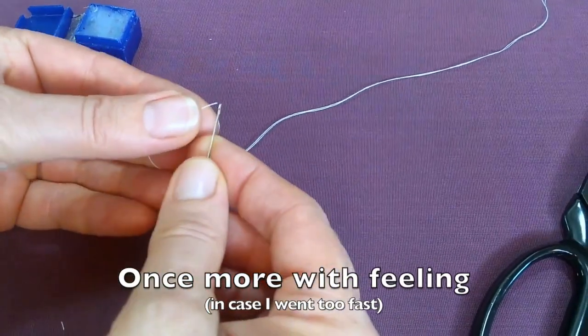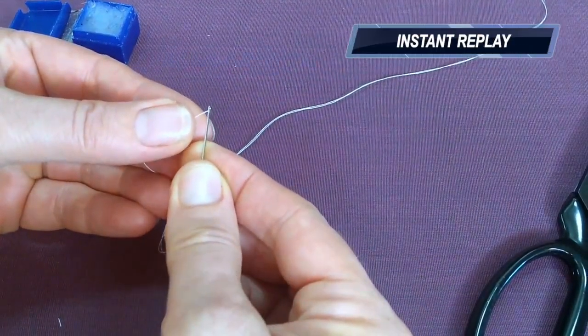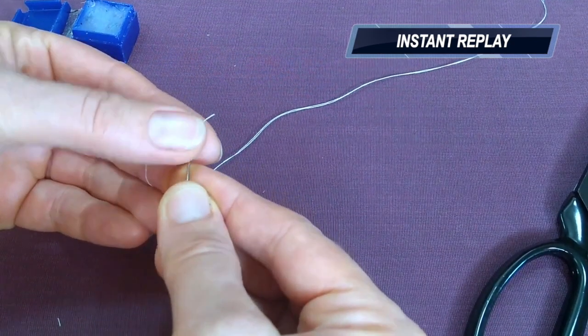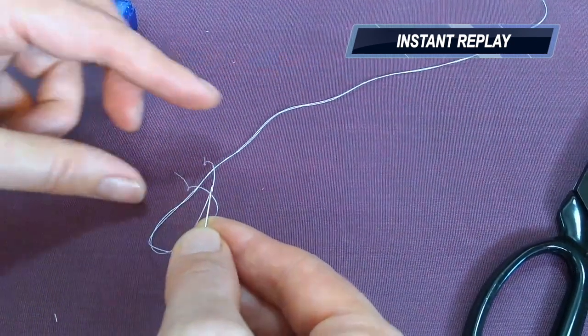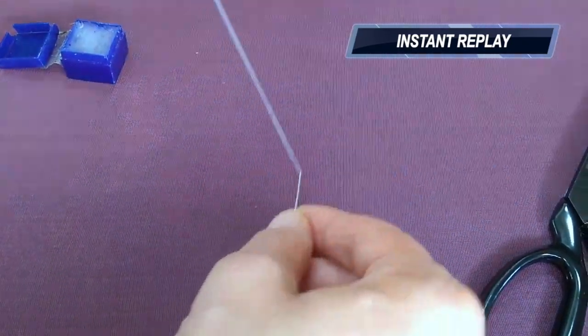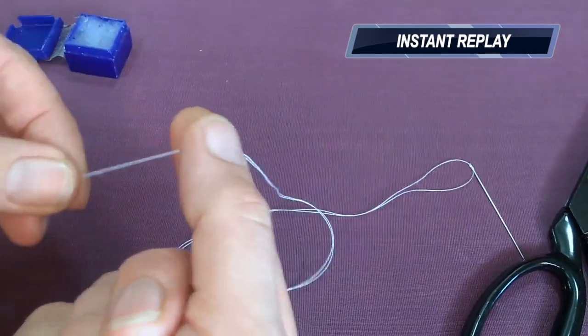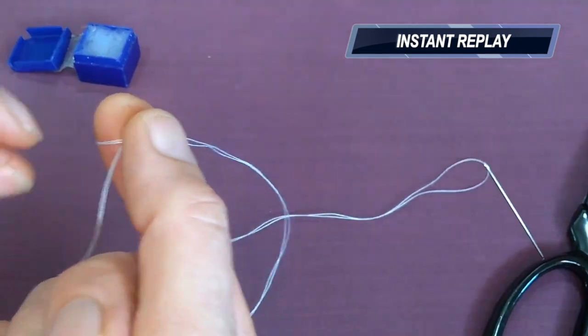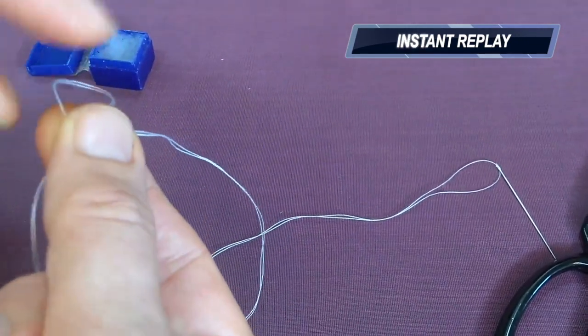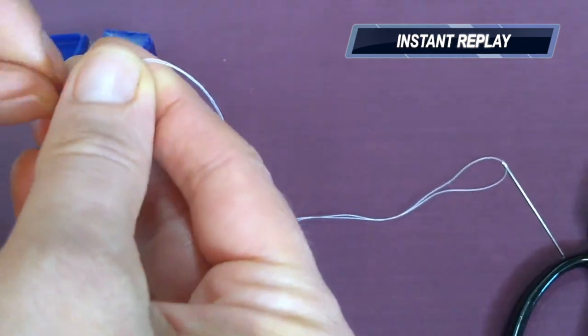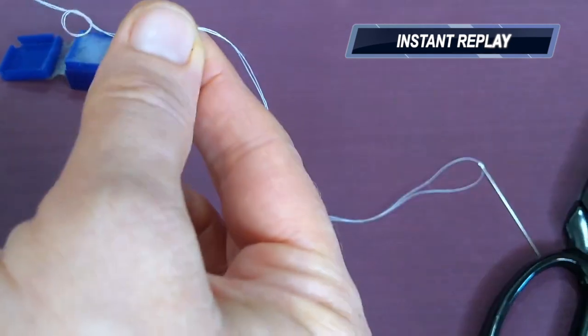I'll hold one of the cut ends, hold the needle steady, and poke the thread through the eye of the needle. It might take a couple tries. Then I'll gather my cut ends, pull them out to the bottom, hold the thread like this, make a loop around my finger, take those cut ends again, and poke them back through the loop to form a knot.